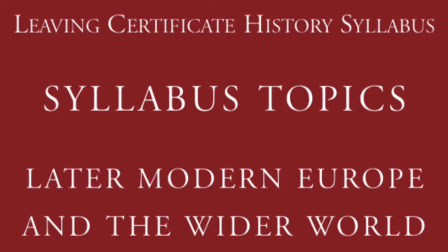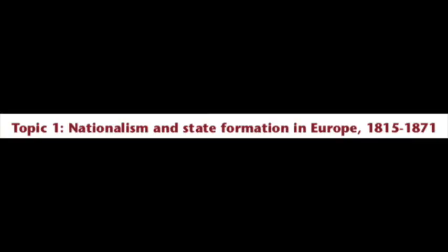The topic which will be discussed in this lesson comes from the Later Modern Europe and the Wider World syllabus: Nationalism and State Formation in Europe, 1815 to 1871. The first part of this topic is the Germanic lands from confederation to empire — the system of Metternich under attack.